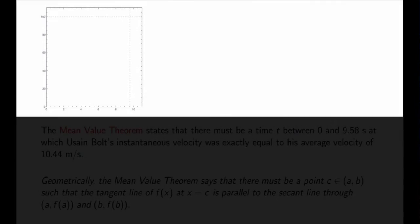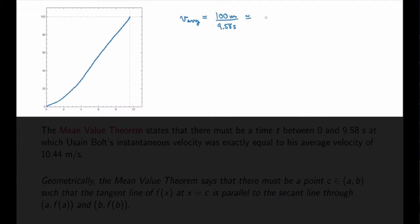Let me start by sketching the graph of Usain Bolt's position function. So he started at t equals zero, accelerated, reached a peak velocity, and finished the race at t equals 9.58 seconds. One thing that we can calculate is his average velocity: the difference in position divided by the difference in time, which is 100 meters divided by 9.58 seconds, giving approximately 10.44 meters per second.